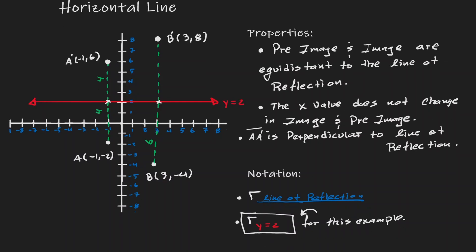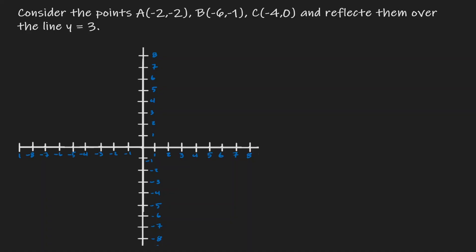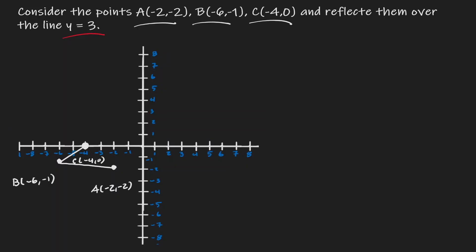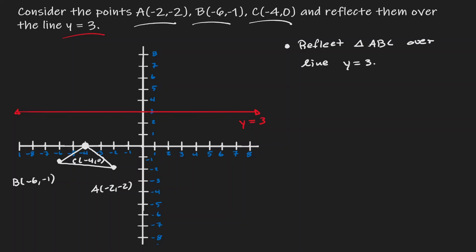Let's take a look at another example. Let's consider three coordinate points and reflect them over the line y equals 3. Let's plot those points, connect them to form a triangle, and draw our line of reflection. So essentially, we want to reflect this triangle over the line y equals 3, and we'll reflect one vertex at a time.